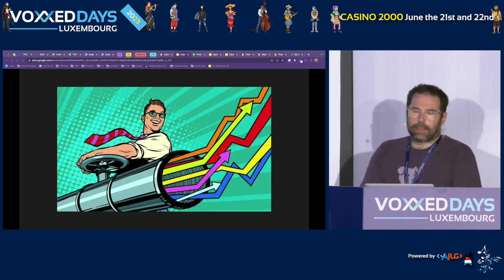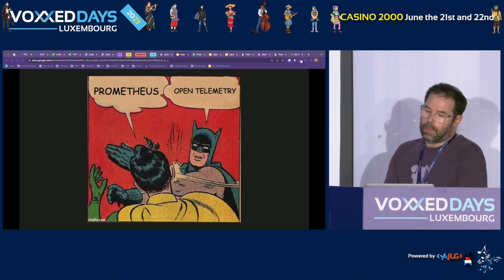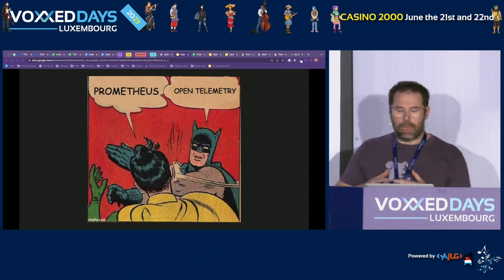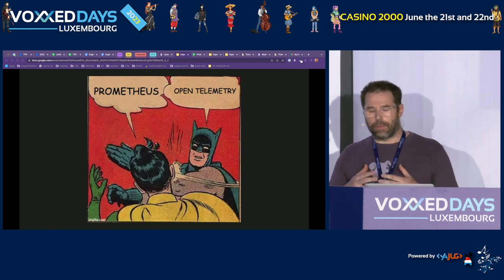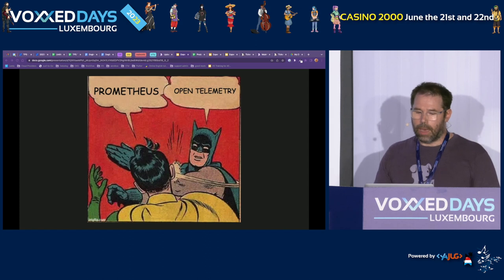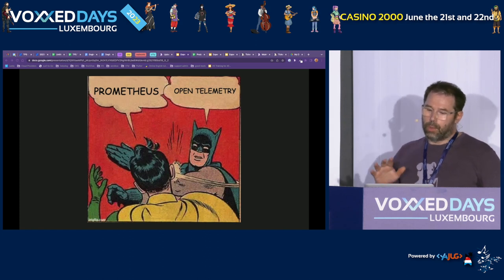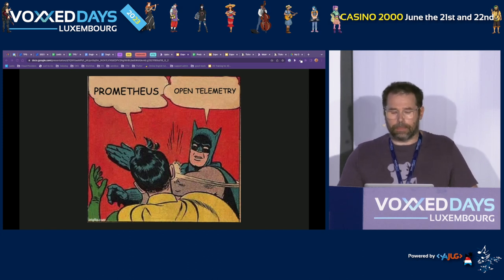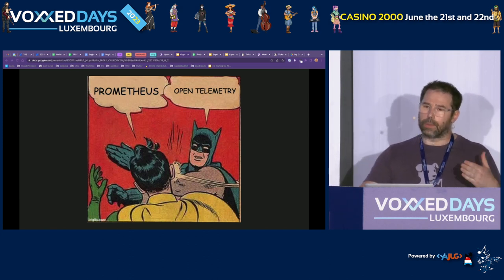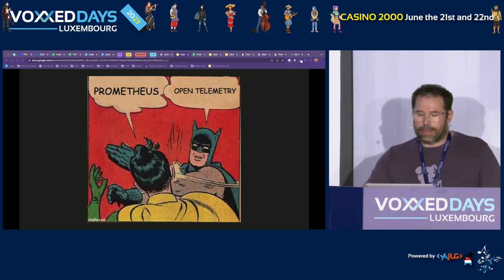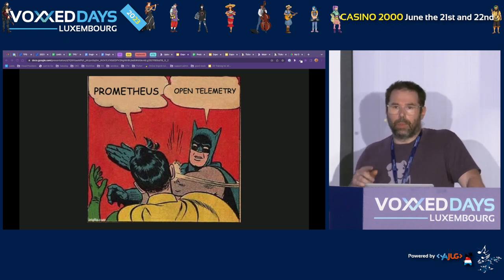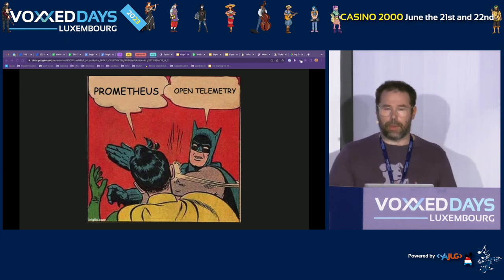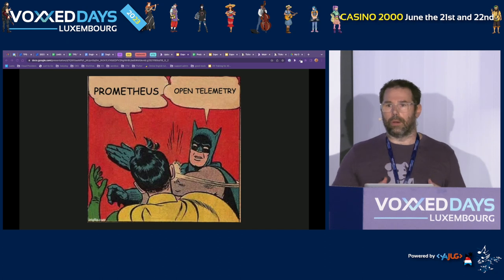As for metrics, Prometheus allows you to easily instrument your application and has become, in a few years, a kind of standard for cloud-native applications. I advise you, however, to take a look at OpenTelemetry, which is a new open source standard for cloud-native applications that all vendors agree to adopt. This means that an application instrumented with OpenTelemetry doesn't need to be refactored if you decide to change from vendor A to vendor XYZ.